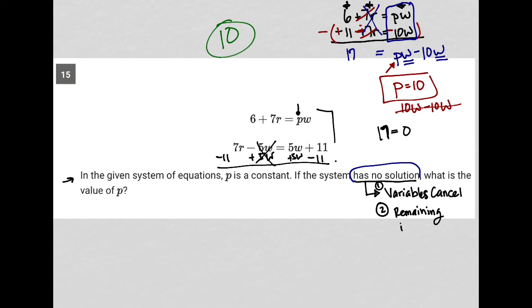The remaining is not true, which is important to a degree. For this question it's not critical, but for other questions it might be. 17 does not equal 0, so we get a check mark next to our second rule. The answer is 10.